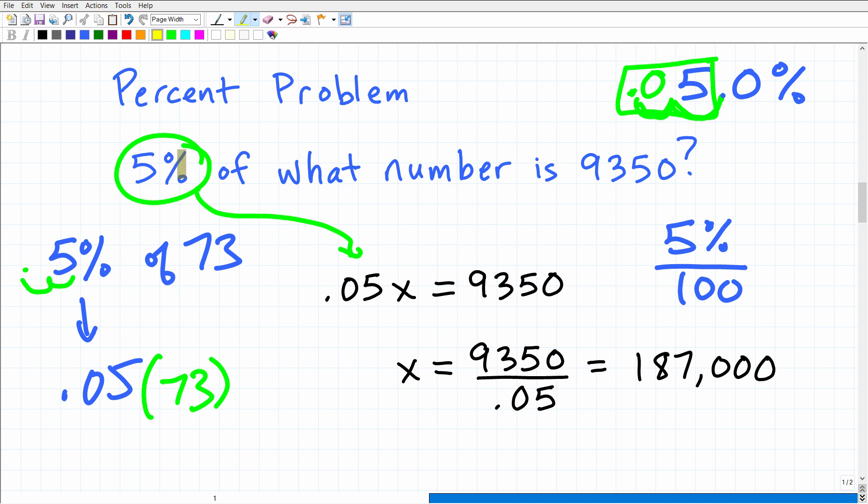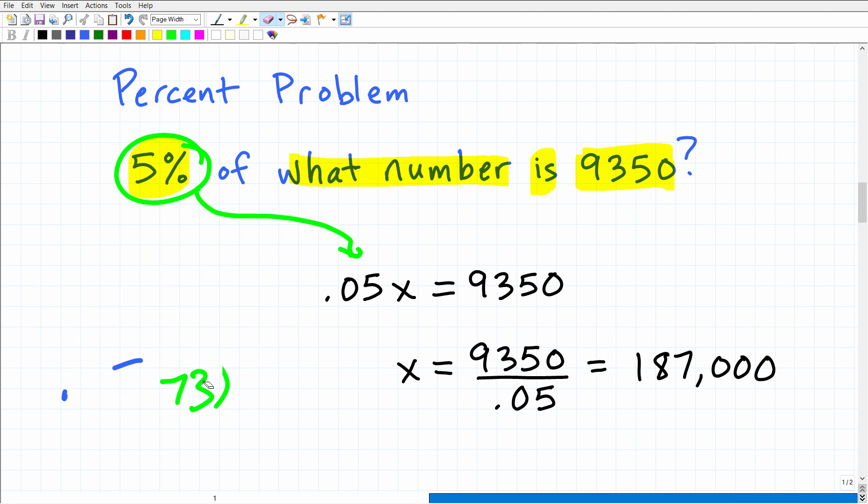All right. So, as we walk through this, 5% of what number? So, 5%, 0.05, what number? That's just the variable x is, is equal sign, 9350. If you understand that, all we need to do is solve for x. Let me erase all this so we can concentrate on the equation solving part of this problem. So, 0.05x equals 9350. To solve for x, all we need to do is divide both sides of the equation by 0.05. So, in our calculator, we'll go 9350 divided by 0.05, and you'll get our answer, 187,000.